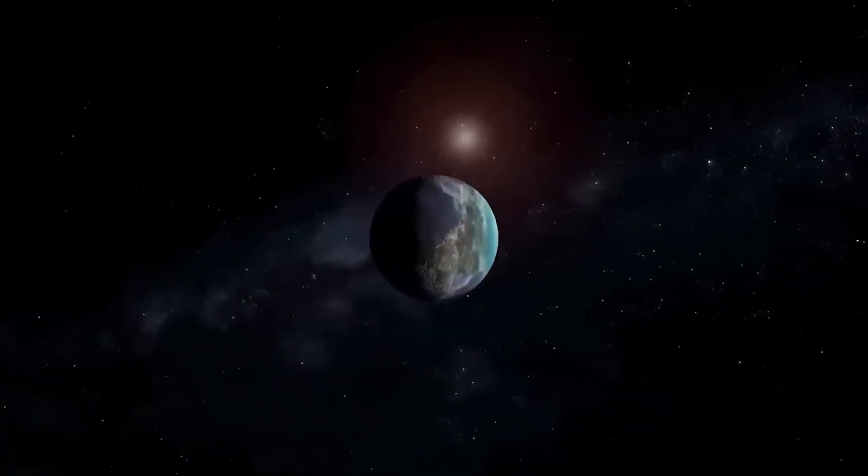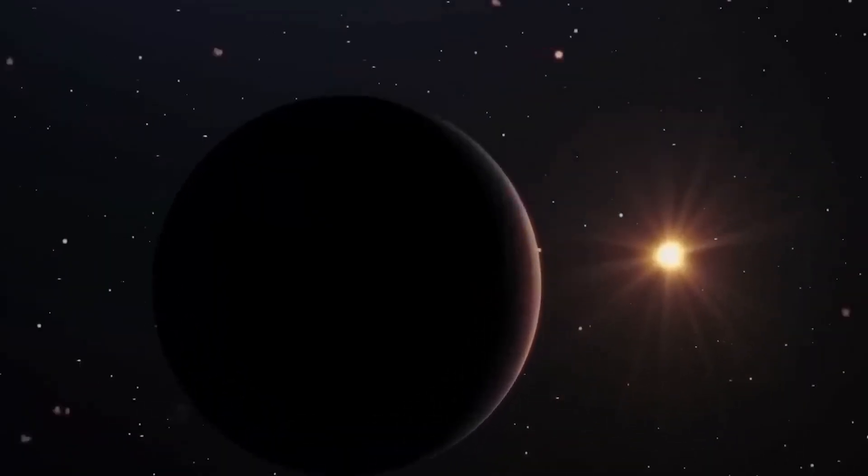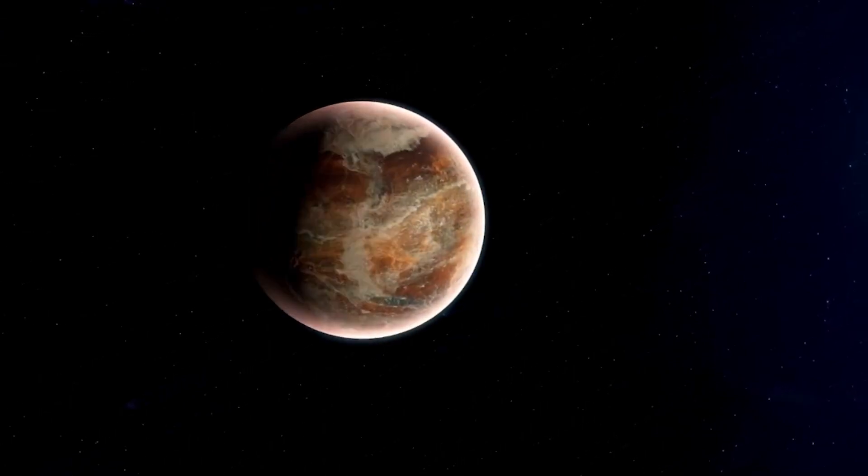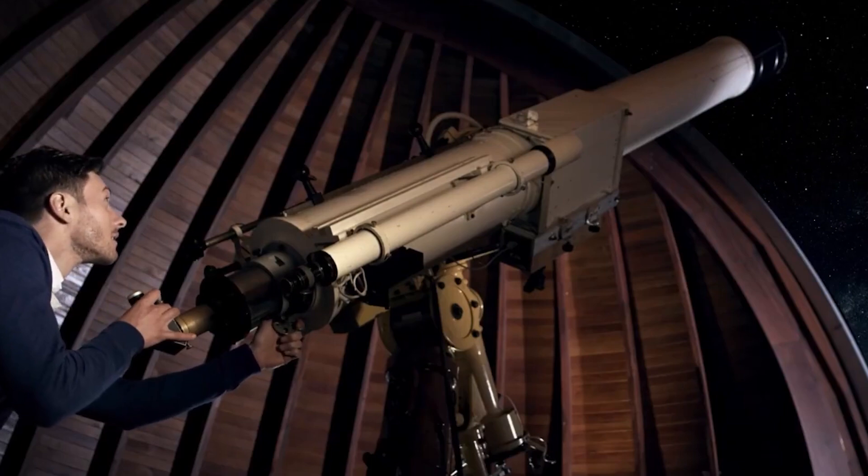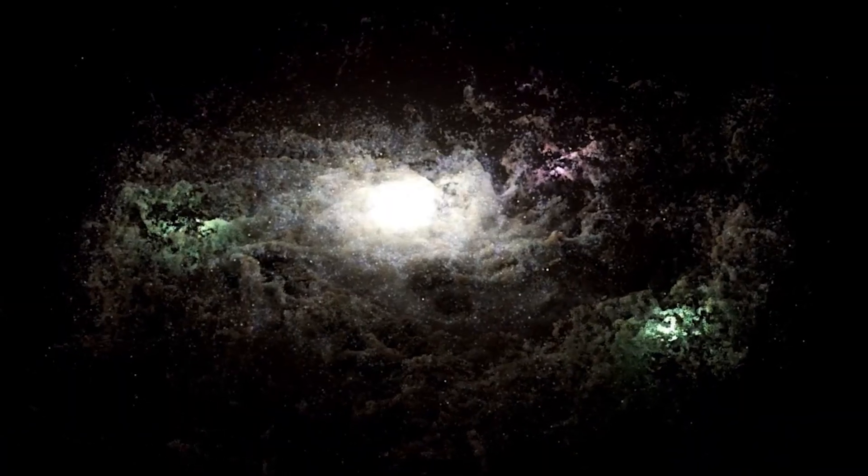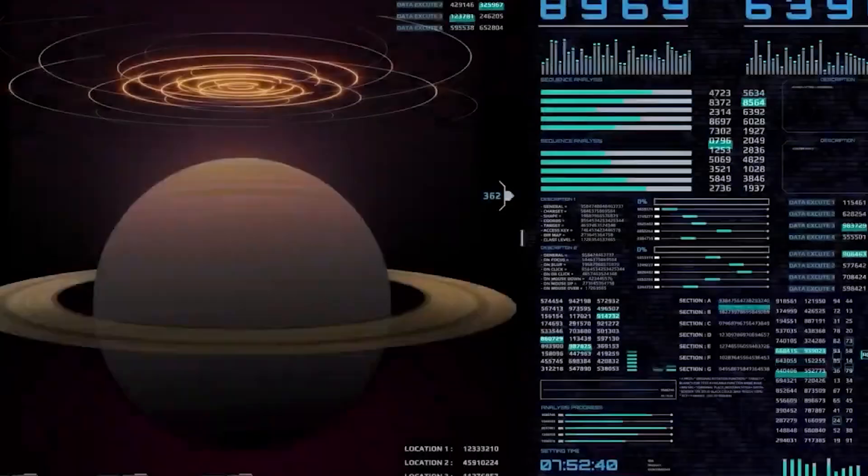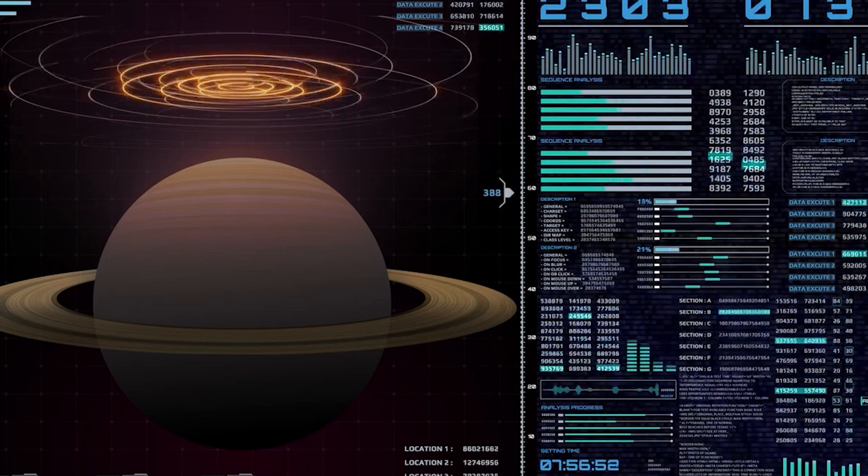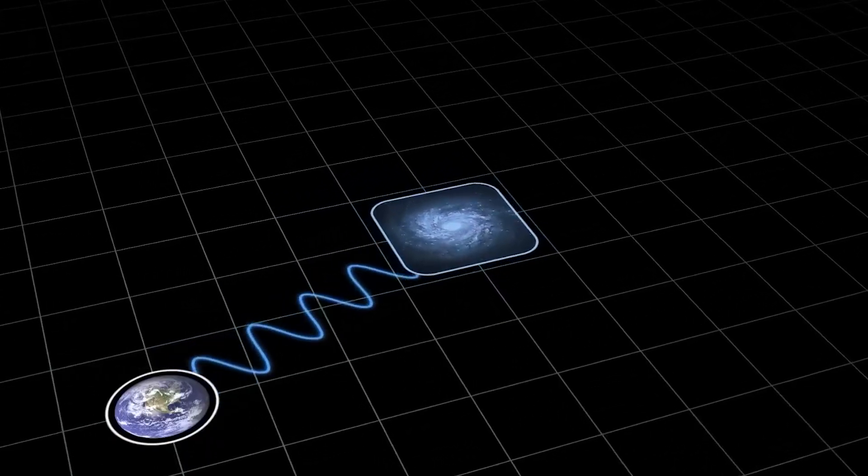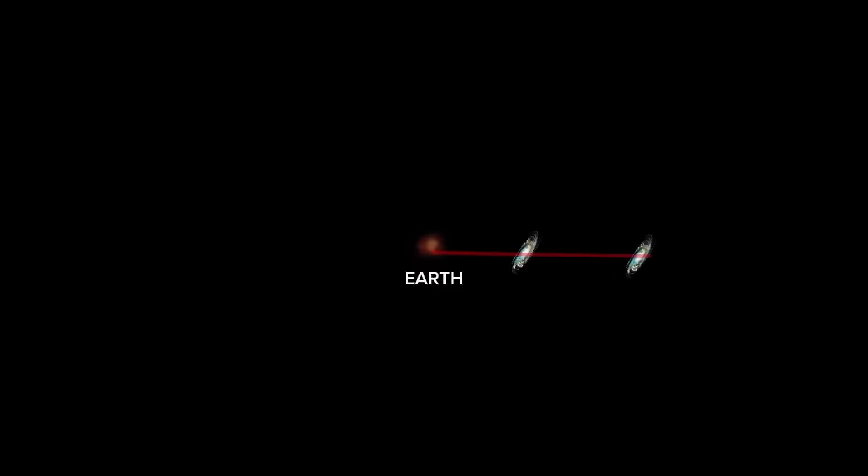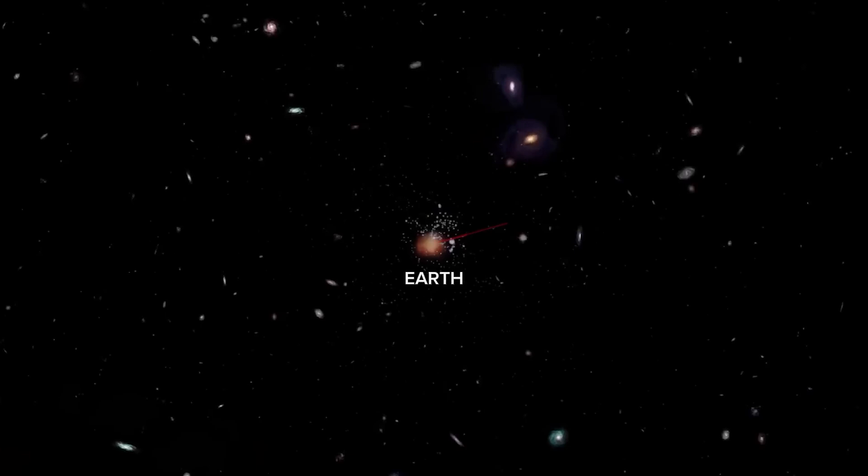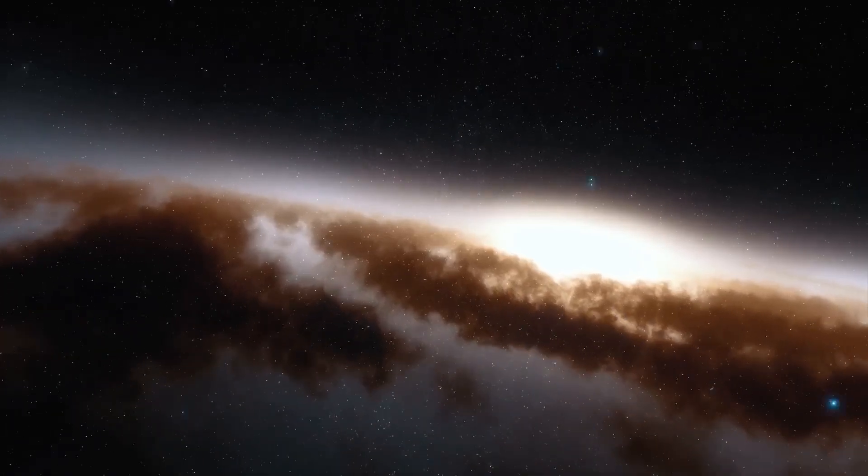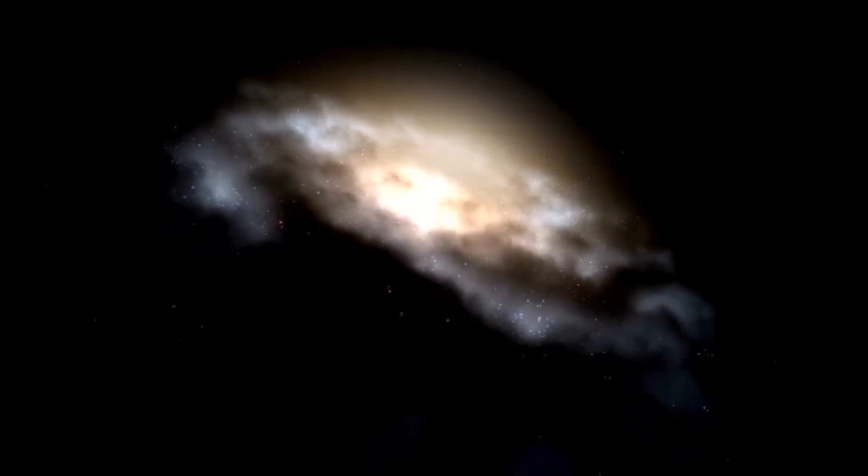Webb's data is pushing scientists to confront questions they once considered unthinkable. What if the universe never had a beginning in the way we imagine? Some Nobel laureates are now openly questioning the Big Bang model itself. Because if galaxies could form faster than physics allows, if light can reach us from beyond cosmic boundaries, and if structures can appear that defy our understanding of time, scale, and mass, then maybe our entire story of cosmic history is flawed. Maybe what we call the early universe isn't early at all. Maybe what we're seeing is not a timeline, but a fracture. A junction where two universes overlap. Or perhaps worse, it's a place where something far older than our universe is bleeding through into ours.